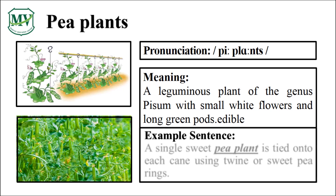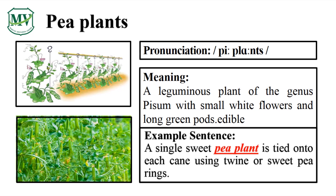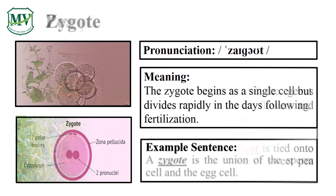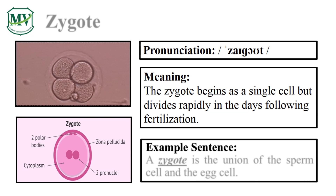Great job! A single sweet pea plant is tied onto each cane using twine or sweet pea rings. Pea plants. Can you read the sentence on your own?